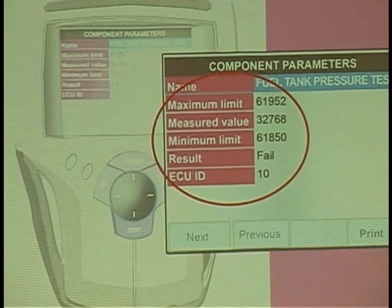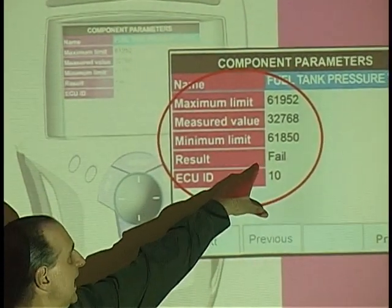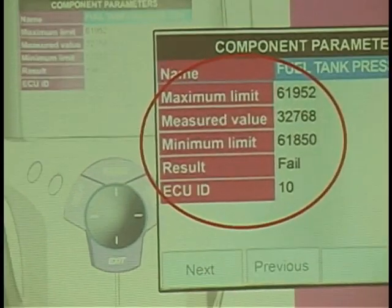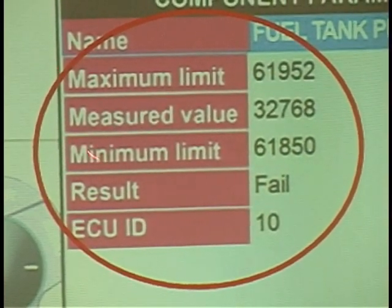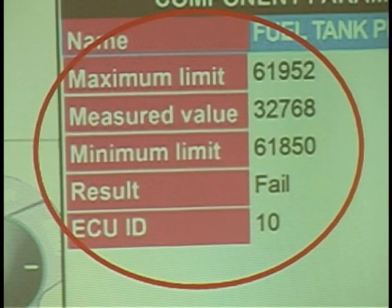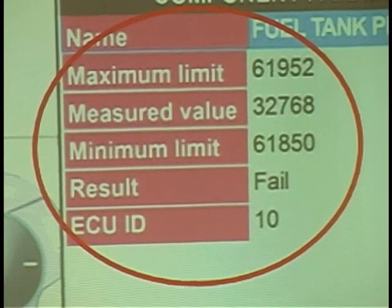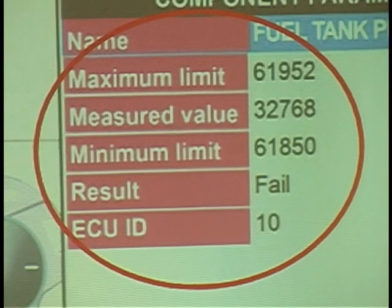This one here actually helped me fix a car up in Alaska — a Ford EVAP setup. We were in ECU number 10. It failed, so I looked at it. A minimum limit of 61,850, a maximum of 61,952. It measured and tested — could you see why it failed? You may ask what that number means; I personally don't care what the number means — I know it failed. It told me it's a fuel tank pressure test. I found a broken line to fix the problem. Meanwhile, pending code didn't have anything. The customer complaint was the MIL would come on once in a while. So Mode 6 is helpful in this case.